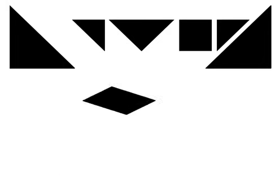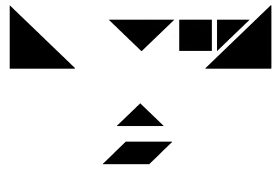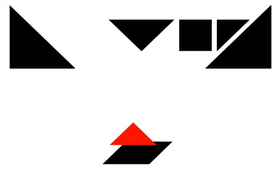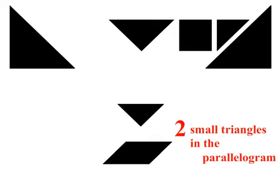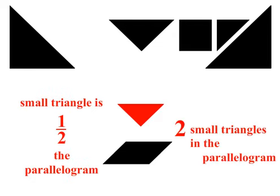Now let's look at the parallelogram. Just like the square and the medium triangle, the parallelogram can be covered with two small triangles, so the parallelogram is equal to two small triangles, and the small triangle is half the parallelogram.